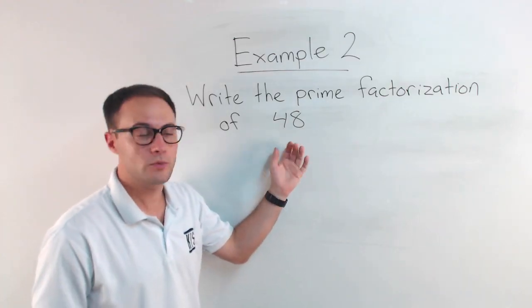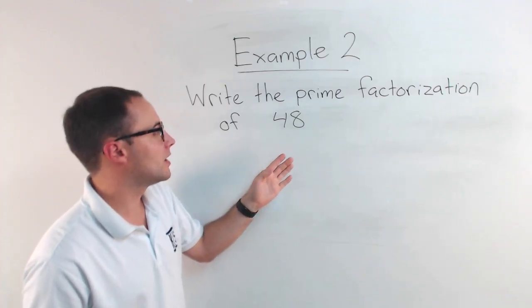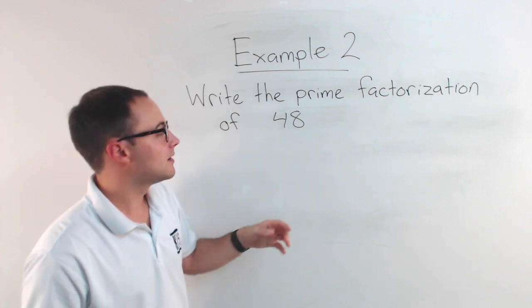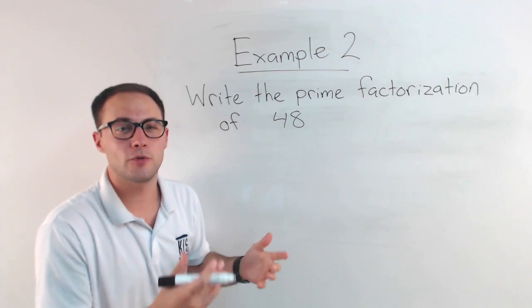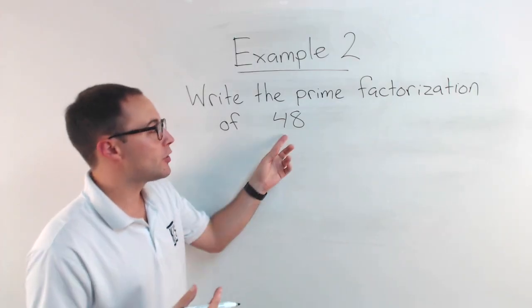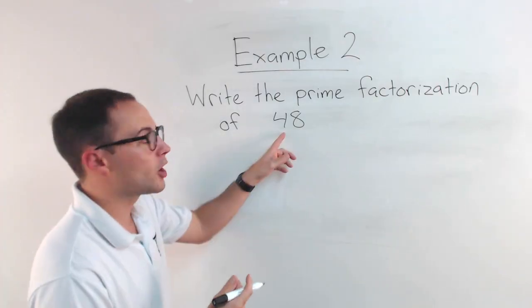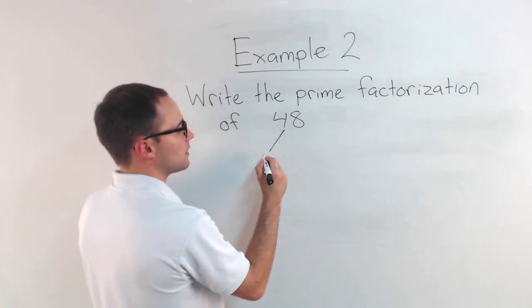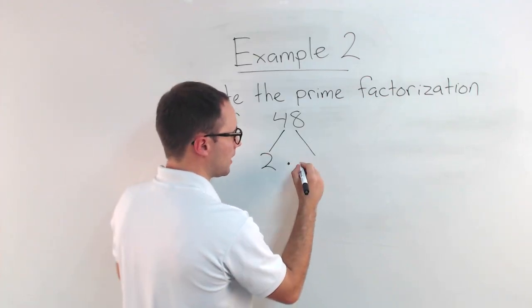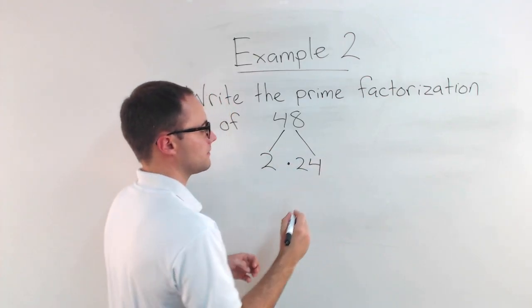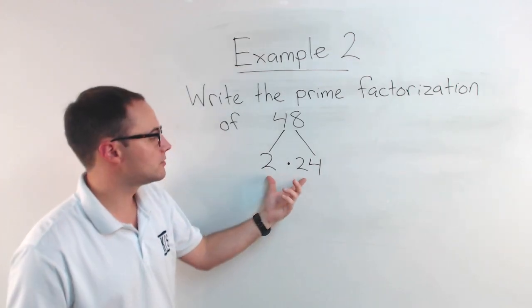There's lots of ways we could start. We could start with two and 24. We can start with six and eight. We could do four and 12. It doesn't really matter how you start. It's up to you. If you have an even number, a lot of people like to start with two. You know, two is a factor. Two times 24. So there's our factor pair, just like what we did before. Two times 24.